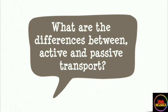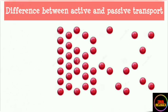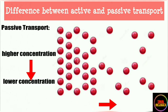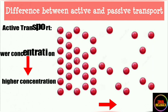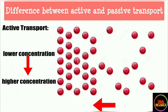The first and major difference between active and passive transport is the direction of molecular movement. In passive transport, molecules travel from higher concentration to lower concentration, whereas in active transport, molecules travel from lower concentration to higher concentration.